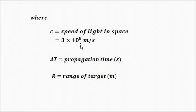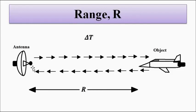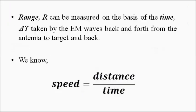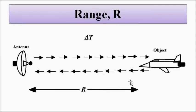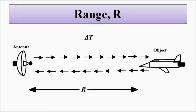The speed of the signals is the speed of light — 3 × 10⁸ meters per second — which is a known quantity. The time lapse between transmission and reception of the signal can also be determined. Since the same distance is traversed twice — to the target and back — the total distance traveled is 2R. Therefore: c = 2R / Δt, giving us R = cΔt / 2. This formula calculates the range, or distance between the radar antenna and the object.